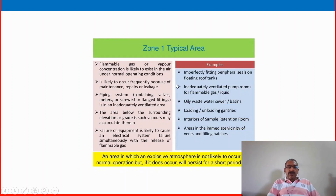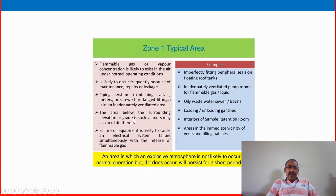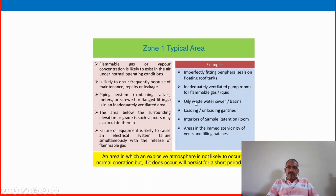Zone 1: flammable gas or vapor concentration is likely to exist in the air under normal operating conditions, slightly over 1.5 meters radius from Zone 0. It is likely to occur frequently because of maintenance, repair or leakage. Piping systems containing valves, meters or screwed or flanged fittings in an inadequately ventilated area. Areas below surrounding elevation or grade where denser vapors may accumulate. Failure of equipment is likely to cause an electrical system failure simultaneously with the release of flammable gas.